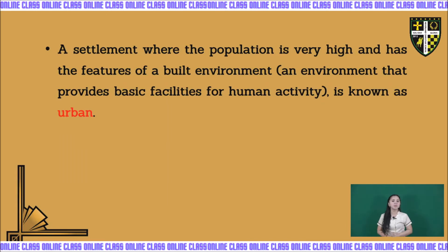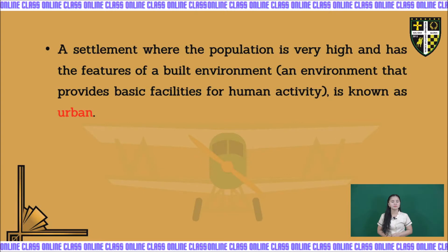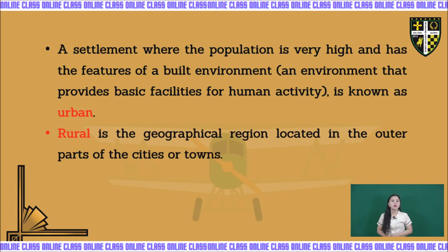A settlement where the population is very high and has the features of a built environment that provides basic facilities for human activity is known as urban. Rural is the geographical region located in the outer parts of the cities or towns.